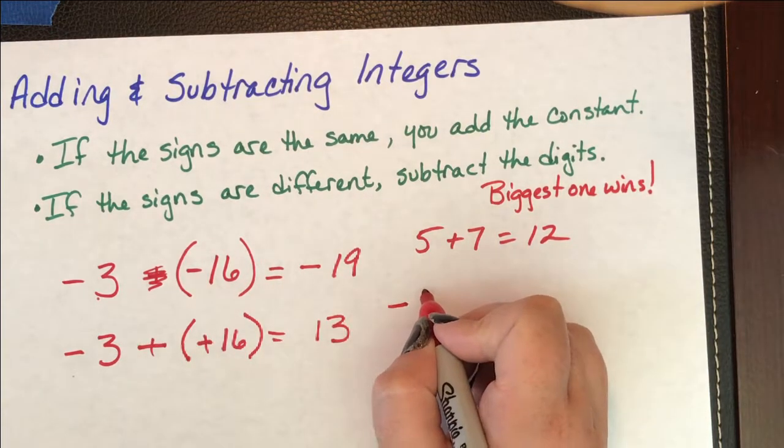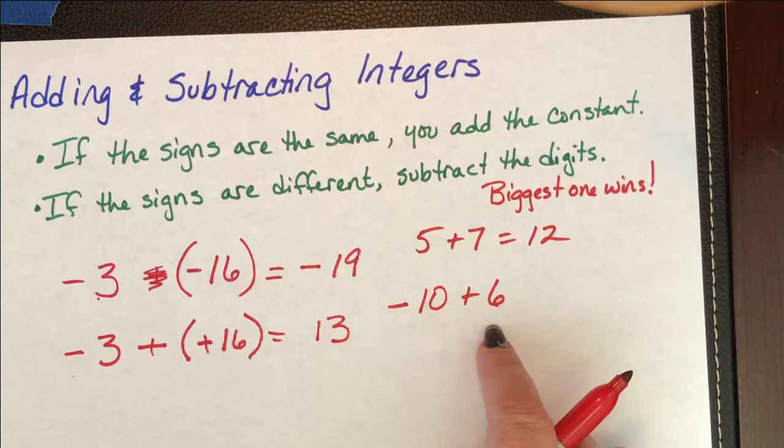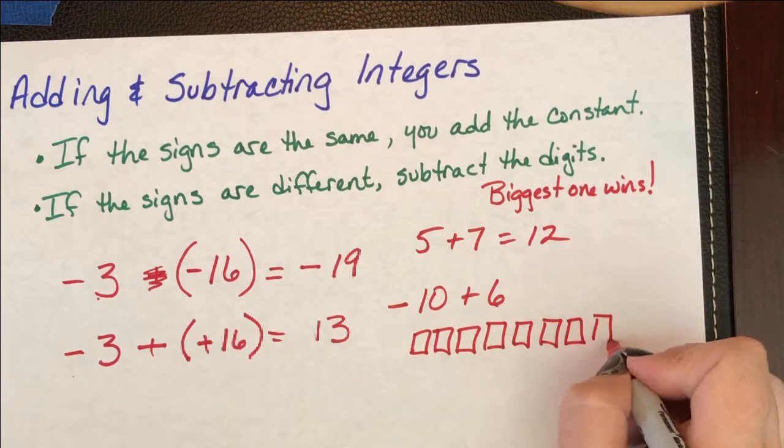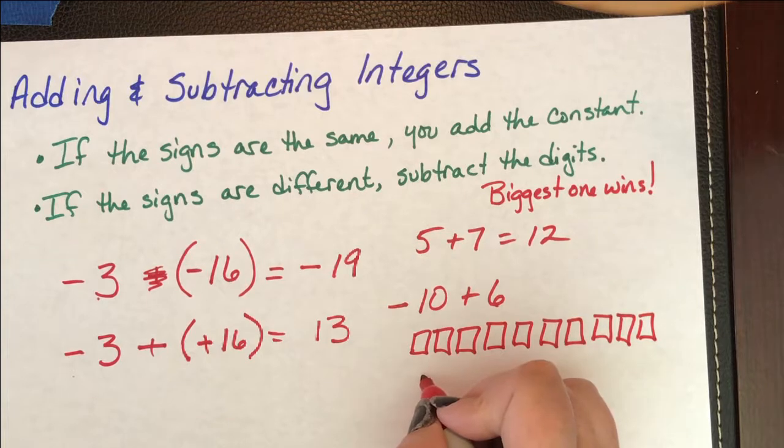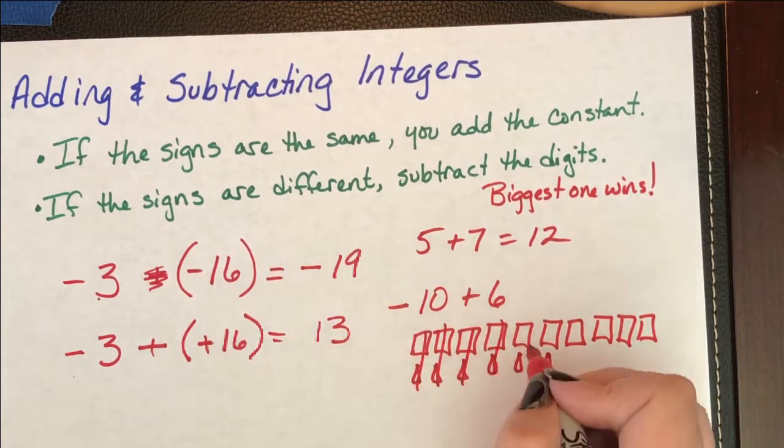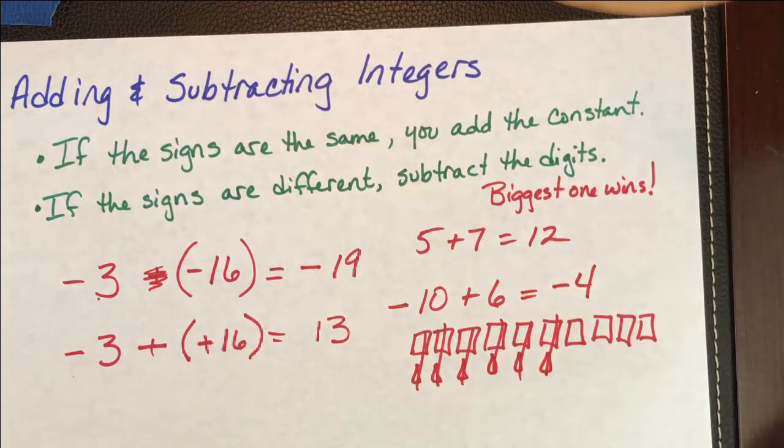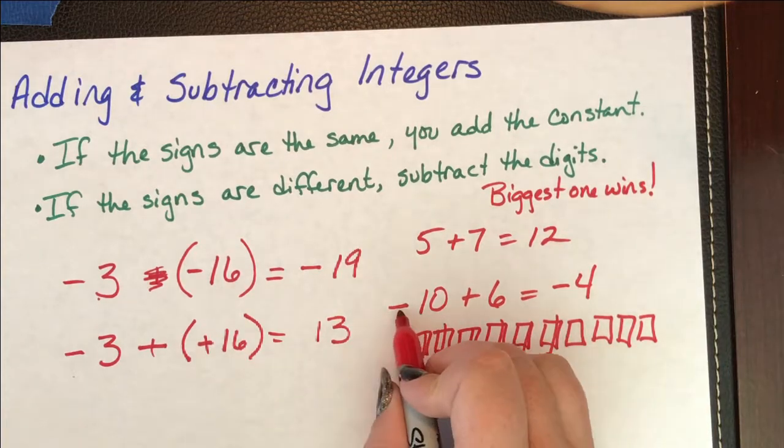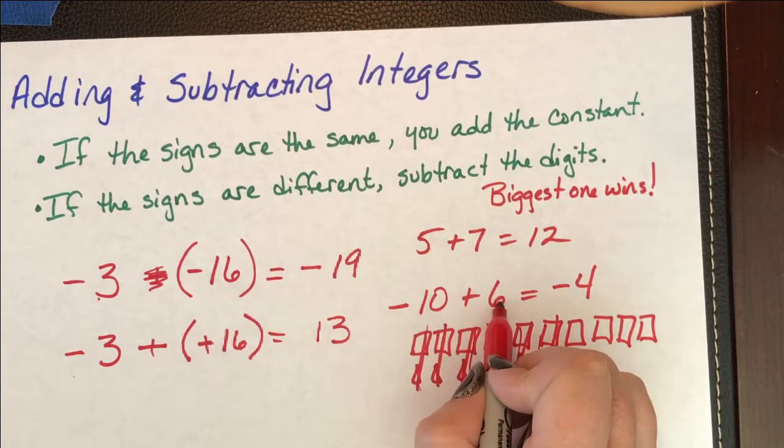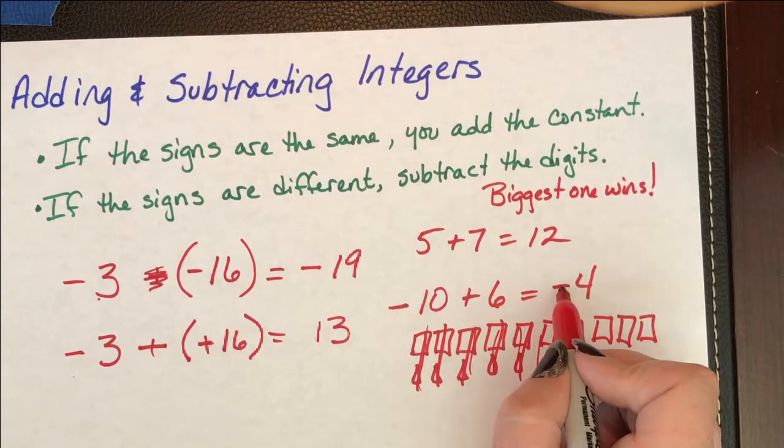If I have negative 10 plus 6, these signs are different. I can go back to using signs if you want. I can say that I have 10 ice cubes and I have six fire, campfires, whatever. These are flames. And these cancel each other out. And I have four ice cubes left over. I have negative four left over. So that's your concept. But in order to get this linear, I have a negative number and a positive number I'm combining. The signs are different, so some of them are going to cancel each other out. I have a 10 and a 6. I'm going to subtract the digits. I get four. And the biggest one wins. I have more negatives than I have positives, so I'm going to have negatives left over. My answer is negative four.